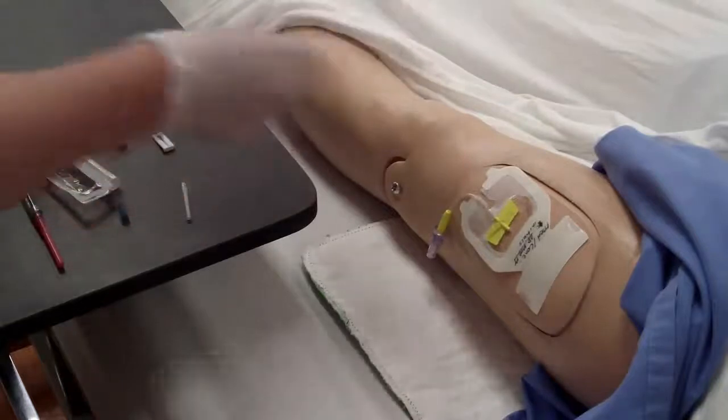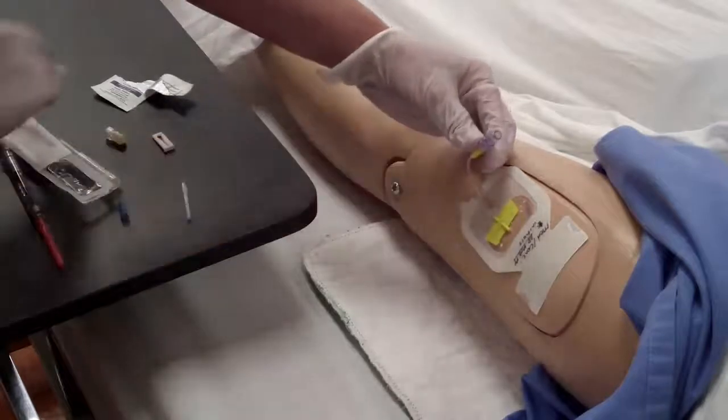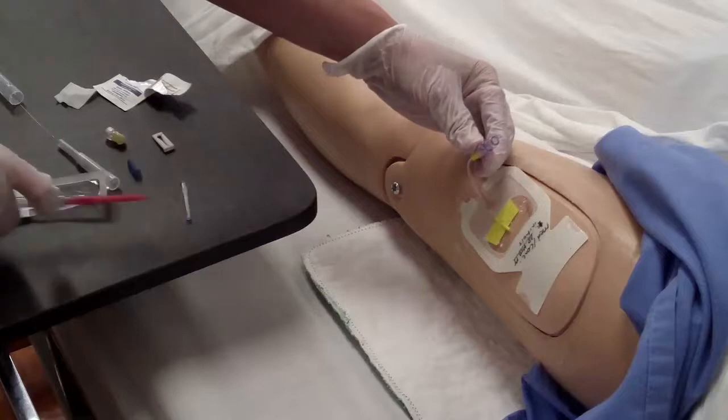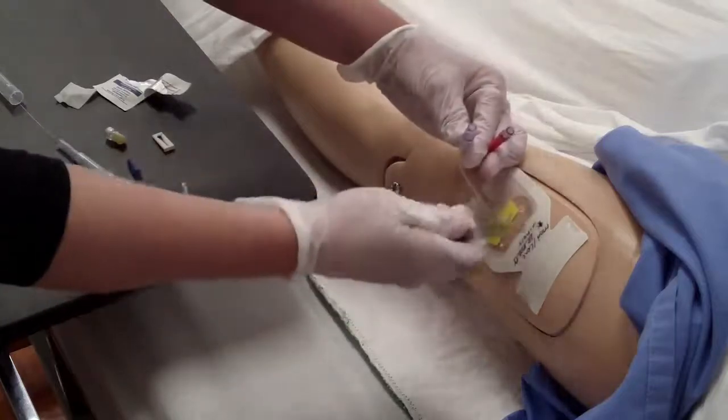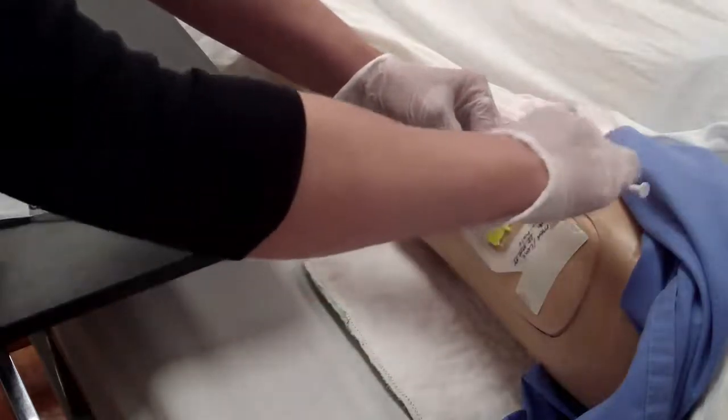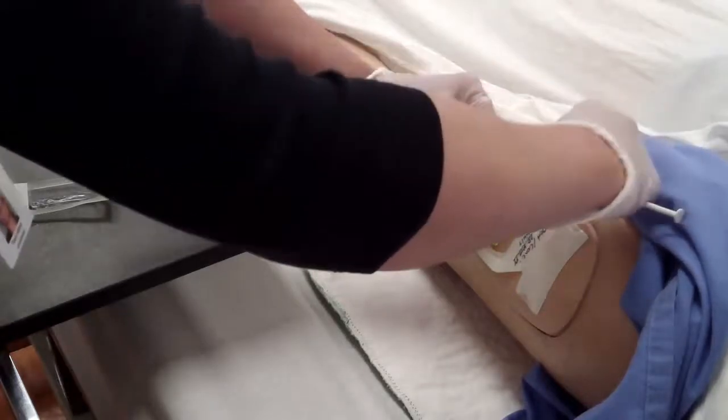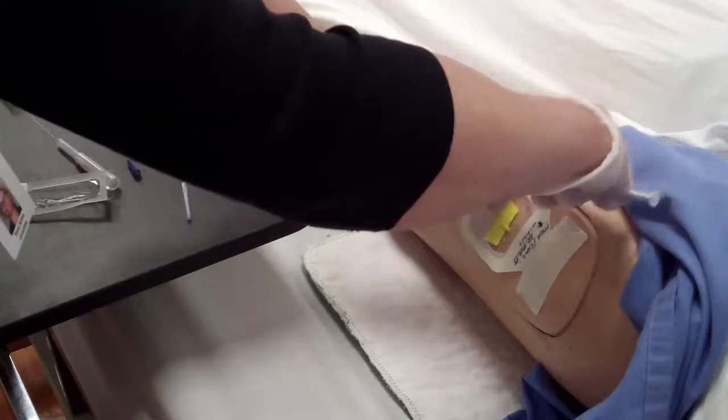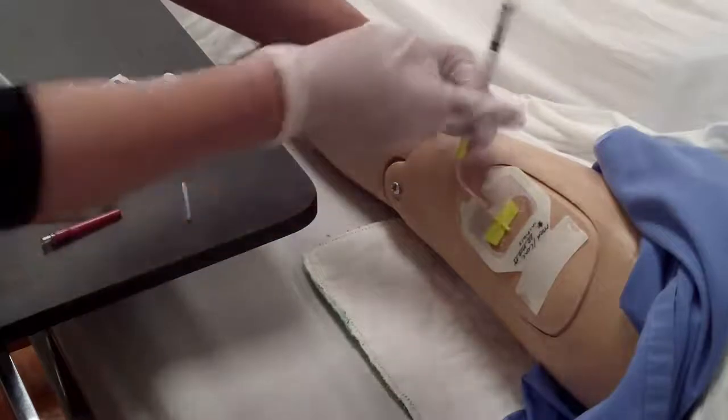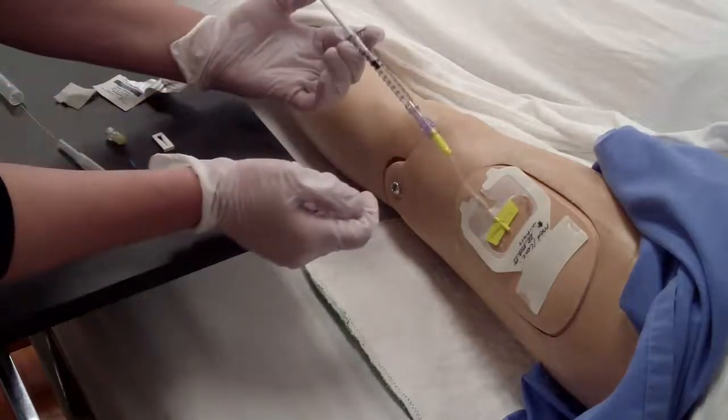You can now give the prepared medication. Clean the end of the microclave connector with an alcohol wipe and allow to dry. Remove the needle from the syringe and screw the syringe directly onto the microclave connector. This is a needleless system. The first 0.21 mils will prime the line, and you will see the medication make its way through the butterfly.